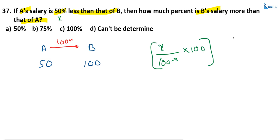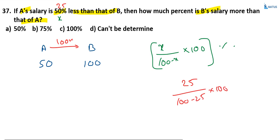This is the answer. For example, if A's salary is 25% less than B, then B is more than A by 25 by 75 into 100. Or if A's salary is 10% less than B, then B is more than A by 10 by 90 into 100. Just apply the formula.